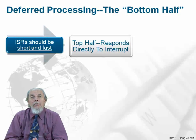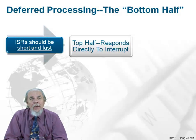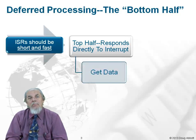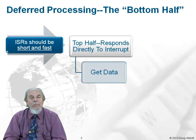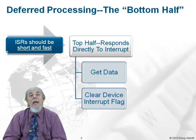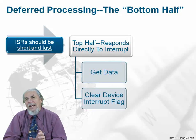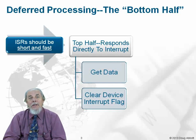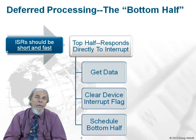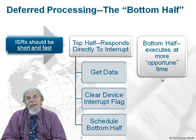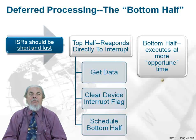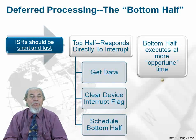In Linux these are called the top half, which responds directly to the interrupt — does things like get some data and clear the device interrupt flag — and then if there is any additional handling that needs to be done, it schedules what's called a bottom half. The bottom half then executes more or less at the kernel's convenience, at a more opportune time.